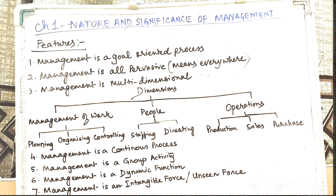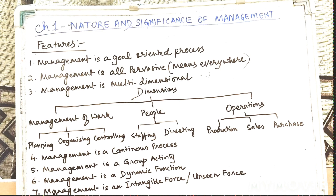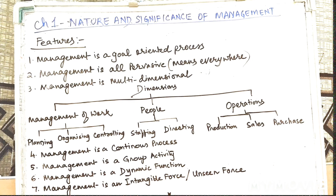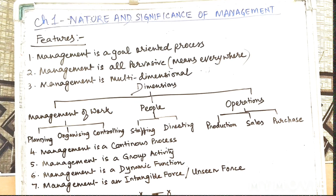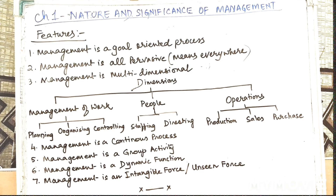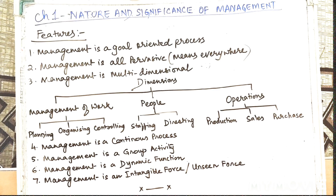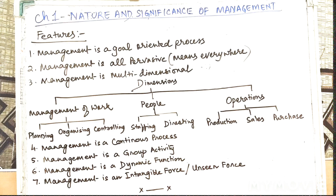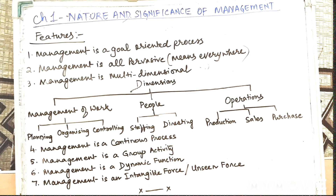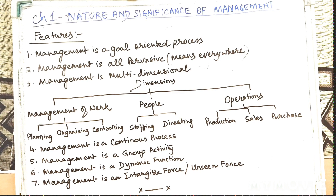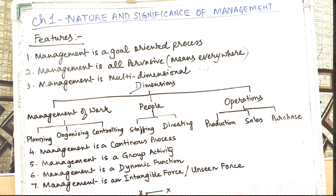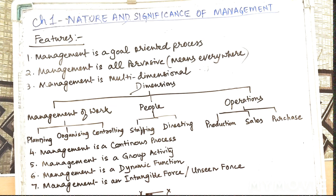Starting with the first one: management is a goal-oriented process. Every organization has a set of goals which is the reason for the existence of the organization. The goals set by the organization should be simple and very clear. For example, earning 20% ROI, increasing sales by 10%, recruiting personnel for different departments, increase in production, and for institutions like schools, giving quality education, or for a hospital, giving proper treatment to its patients.